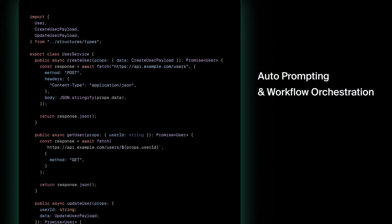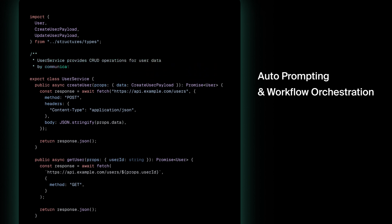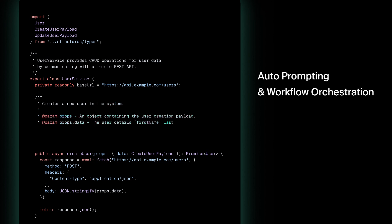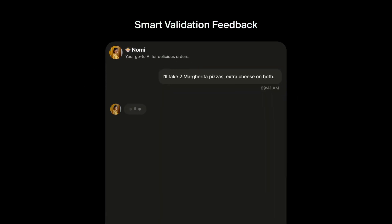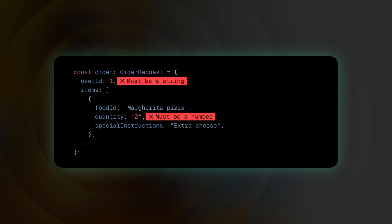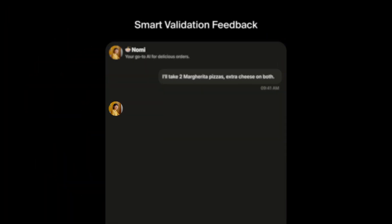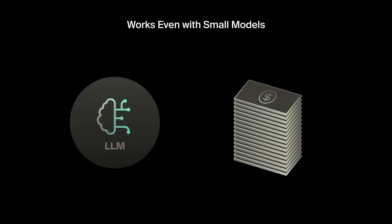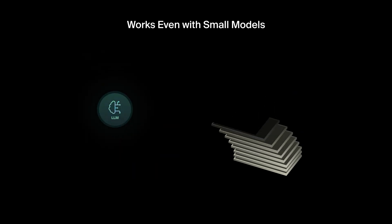Here's what's happening under the hood. Auto-prompting and workflow orchestration: just focus on describing your own functions — EJETICA generates prompts and coordinates multi-step calls automatically, with no need to design custom workflows yourself. Smart validation feedback: if the AI makes a mistake, EJETICA catches it, gives feedback, and helps the model self-improve, leading to a higher success rate and fewer repetitive errors. It works well even with small models — thanks to the strong guidance, EJETICA runs smoothly even with smaller models.